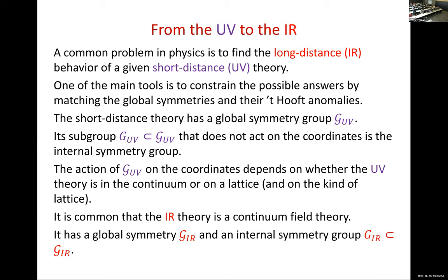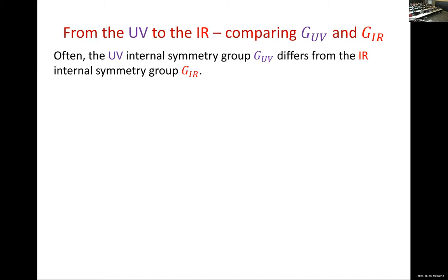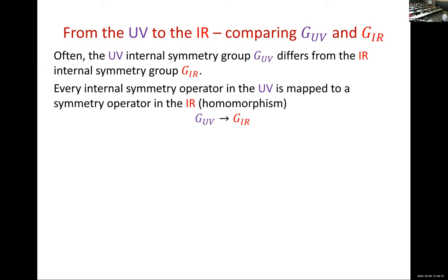In the IR, we again have a total symmetry group and the subgroup — the internal symmetry group of the IR theory. We would like to match the symmetries first, and then match the anomalies. Often the internal symmetry in the UV and the internal symmetry in the IR are not the same group. However, every symmetry transformation in the UV is a good operator in the theory — it commutes with the Hamiltonian — so we have a map from the UV's internal symmetry to the IR internal symmetry. Every operator here maps to an operator there.